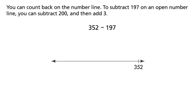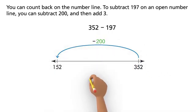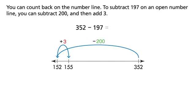You can count back on the number line. To subtract 197 on an open number line, you can subtract 200 and then add 3. 352 minus 197 equals 155.